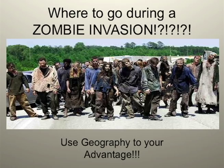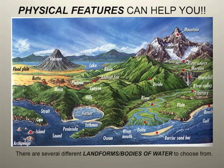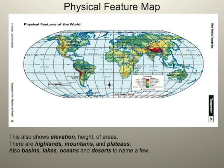These are physical features — landforms and bodies of water. The bodies of water are blue, and the landforms aren't. All of these have advantages and disadvantages, and it's up to you to decide the best one. This is one of the thematic maps we'll be looking at today. This map shows you physical features and also shows elevation. Elevation is how high something is from sea level.